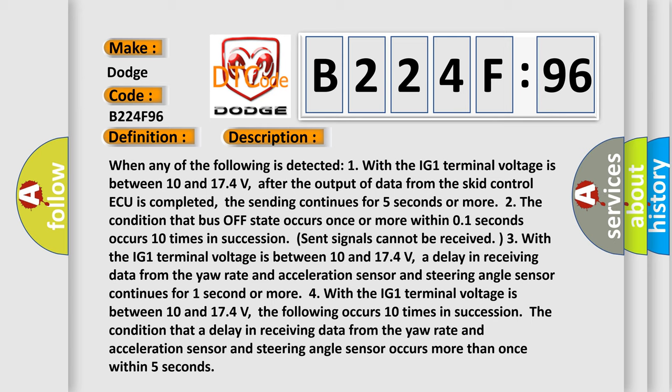Three, with the IG1 terminal voltage between 10 and 17.4 volts, a delay in receiving data from the yaw rate and acceleration sensor and steering angle sensor continues for one second or more.